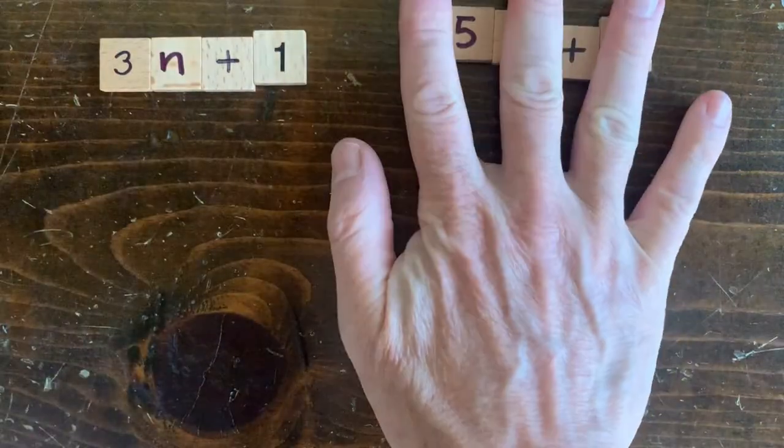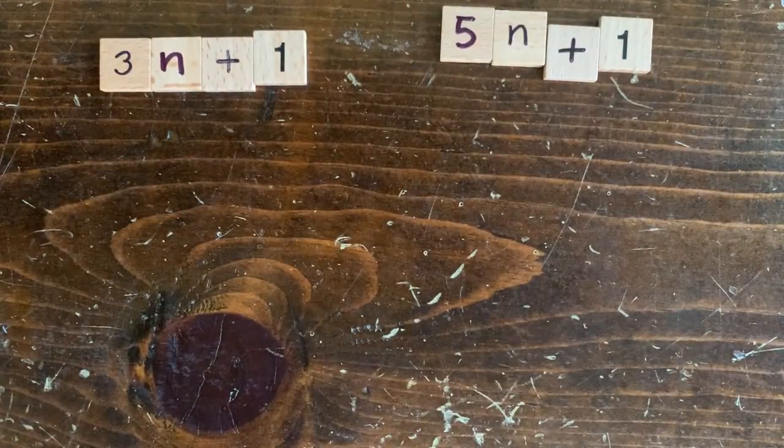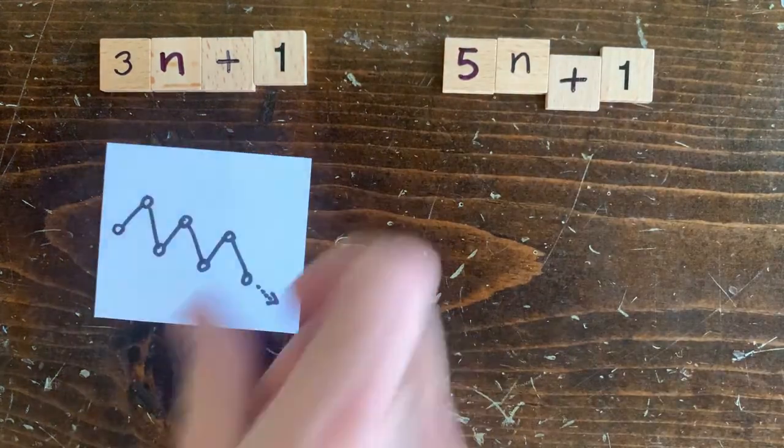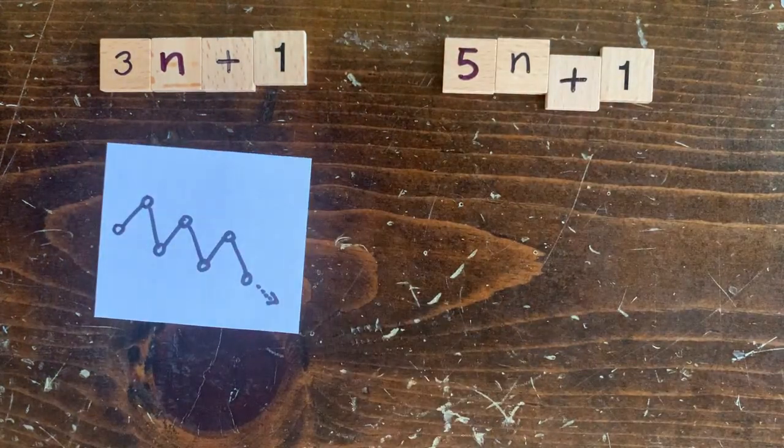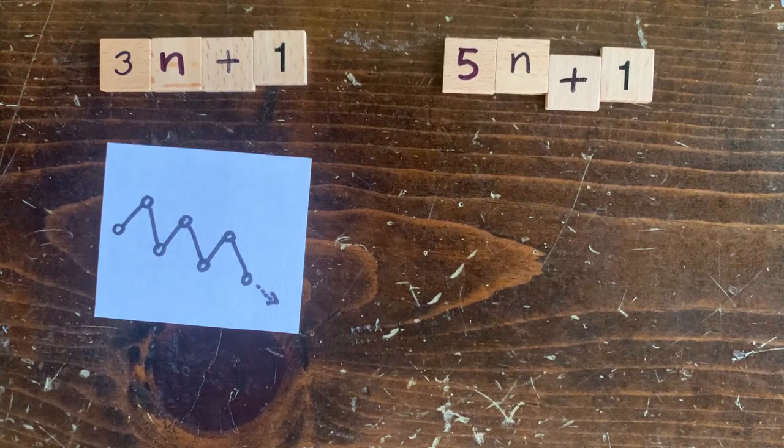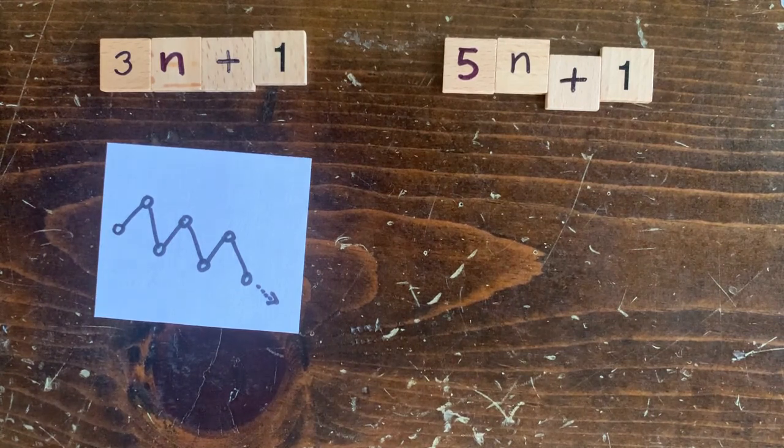So let's focus on 3n plus 1 and 5n plus 1. We noticed before the 3n plus 1 sequences trend downwards, statistically speaking. Half the time you increase n by 50% and half the time you decrease it by 50%. So all numbers seem like they go to 1.